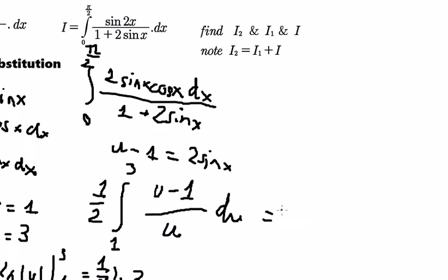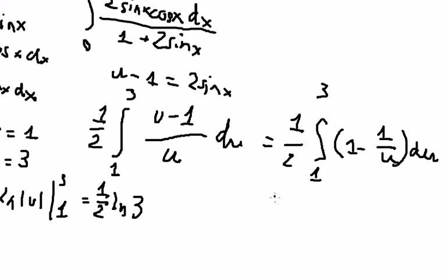So u divided by u, you got number 1. 1 minus u, or 1 over u.